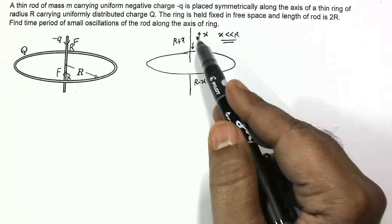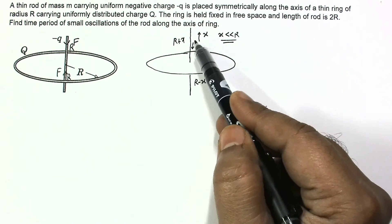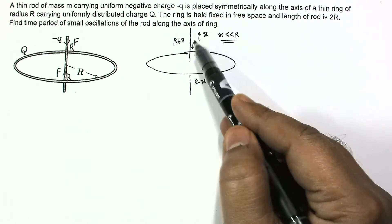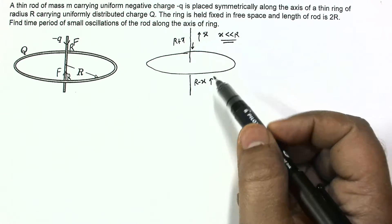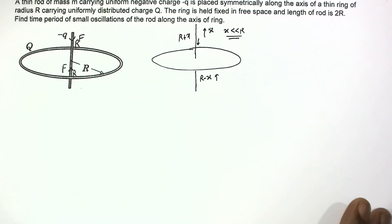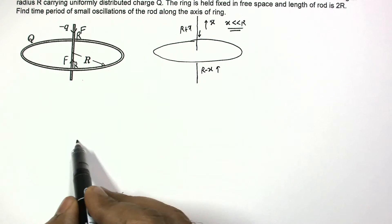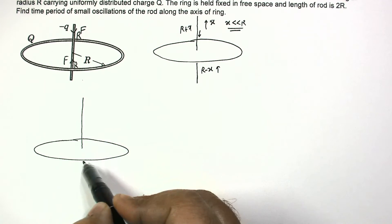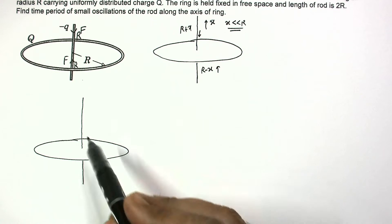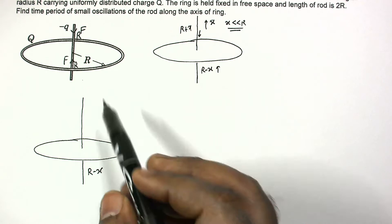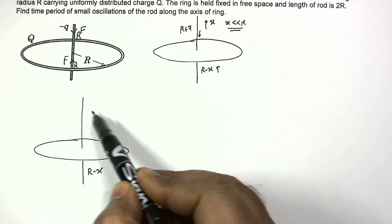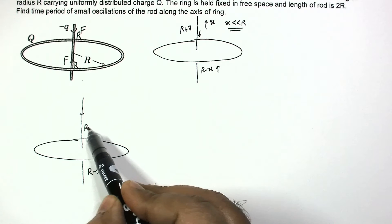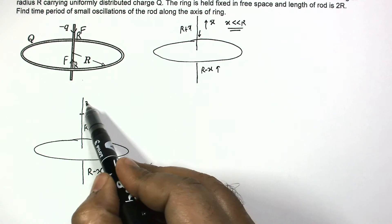Now we have to calculate the restoring force. The net force is proportional to x, so the motion will be simple harmonic. The total length is r plus x on one side and r minus x on the other side. If we consider the displaced segment, the extra length on one side is 2x.